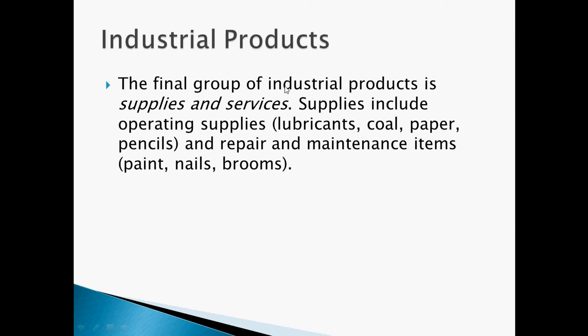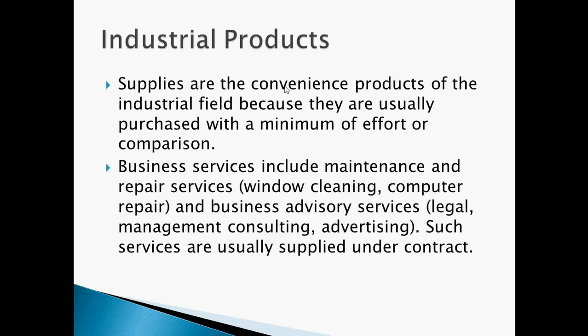The third group of industrial products is supplies and services. Supplies include operating supplies such as lubricants, coal, paper, and pencils, and repair and maintenance items like paint, nails, and brooms. Supplies are the convenience products of the industrial field because they are usually purchased with a minimum of effort or comparison. Business services include maintenance and repair services such as window cleaning and computer repair, and business advisory services such as legal, management consulting, and advertising. Such services are usually supplied under contract.